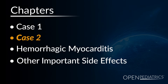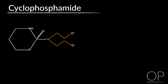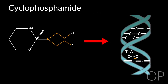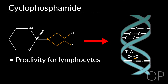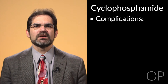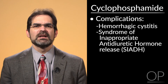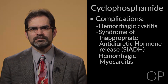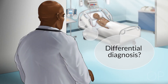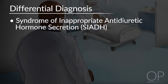Let's move on to our second case. Now it's 3 a.m. and the nurse pages you that a patient was admitted yesterday for conditioning. They began receiving cyclophosphamide with round-the-clock hyperhydration and they haven't urinated in 6 hours. Cyclophosphamide is also an alkylating agent with a proclivity for lymphocytes. It is used in several conditioning regimens for graft-versus-host disease prophylaxis. It can cause hemorrhagic cystitis, a syndrome of inappropriate antidiuretic hormone release, and hemorrhagic myocarditis. The differential for a patient on cyclophosphamide who hasn't urinated in 6 hours includes SIADH and cystitis.